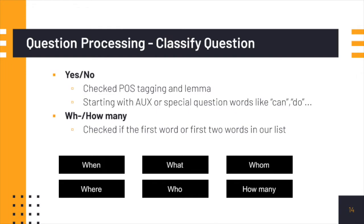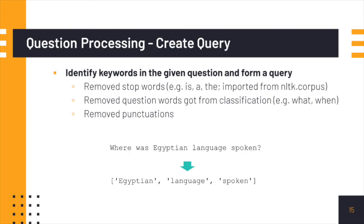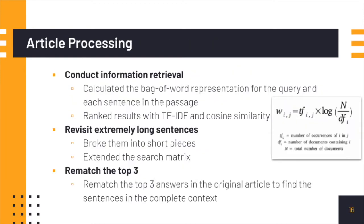After classifying the question, we create a query by removing stop words, question words, and punctuations — for example, for a given question, we only keep the key content words. In article processing, we first conducted information retrieval with bag-of-words and TF-IDF to calculate the cosine similarity. We found that long sentences might be harder to match using this method because they tend to have lower scores. To solve this, we extended our search matrix by also adding shorter pieces of these sentences. After that, we rematch the top three answers in the original article to find the sentences in complete context.